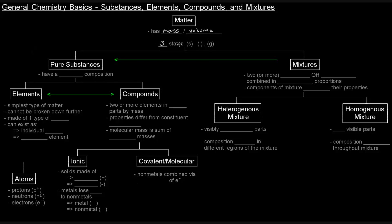And there are three states: solids, liquids, and gases. Now matter, you can either have pure substances or you can have mixtures. Let's talk about pure substances first. Pure substances have a fixed composition. So that might be intuitive - pure substances, fixed composition, that should kind of make sense.